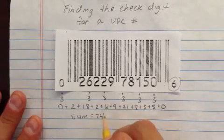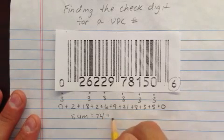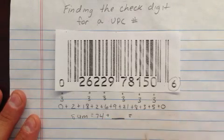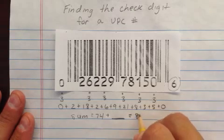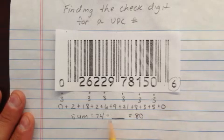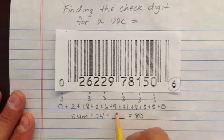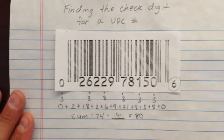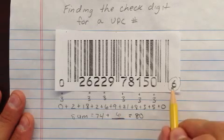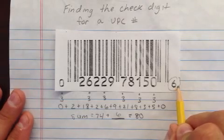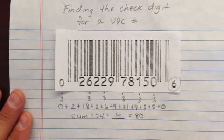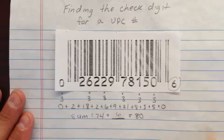So for this one, we have to add something to make this equal to the next highest multiple of 10, which would be 80. Going 70, 80, 90, 100 and so on by 10s — in this case, I have to add a 6 to make that equal 80. And we can see that verifies it as an actual UPC number because the 6 is right here. So the check digit should be a 6, and it is.